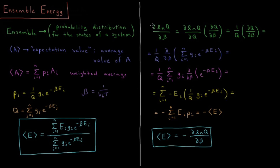Let's look at this derivative: the partial derivative of the natural logarithm of the partition function with respect to beta, the inverse temperature (1 over Boltzmann constant times temperature). This looks a bit unusual at first, but let's see where it leads. By the chain rule, that equals the partial derivative of ln(q) with respect to q, times the partial derivative of q with respect to beta. Since d(ln q)/dq equals 1/q, this simplifies to (1/q)(dq/dβ).